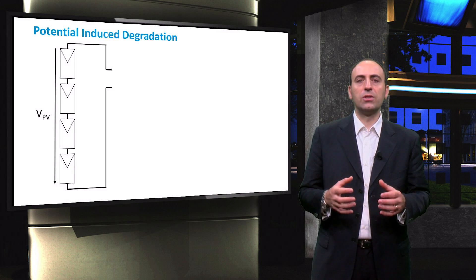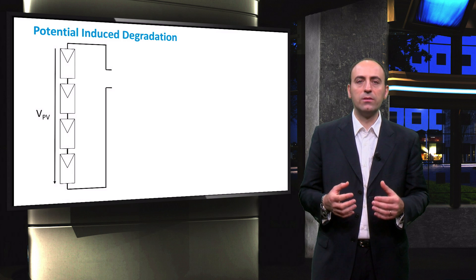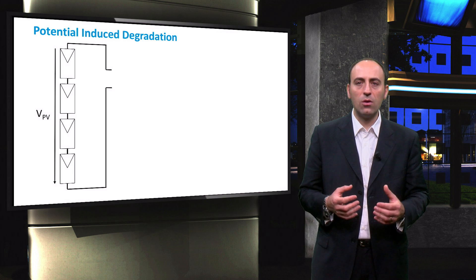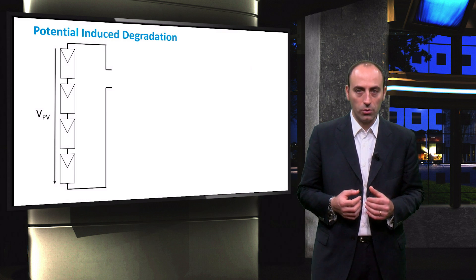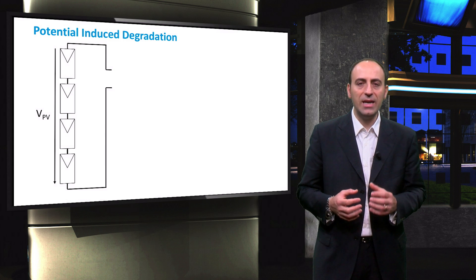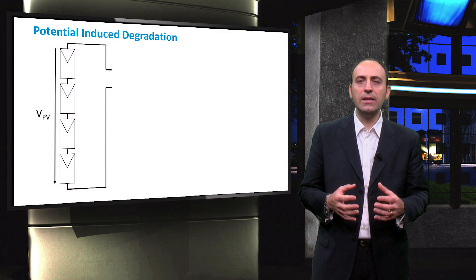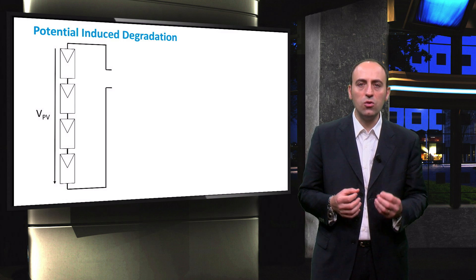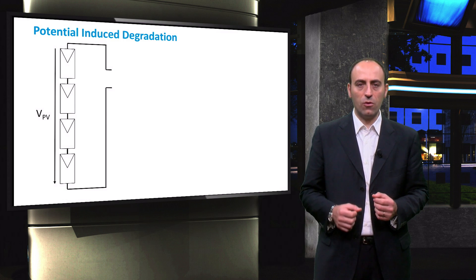Potential induced degradation is a phenomenon that occurs when the voltage on the module and the leakage current act as a driver of ions within the module. The PV system and the environment interact to cause PID. This is due mainly to the fact that humidity and dust on the panels can cause sodium ions to affect the performance.